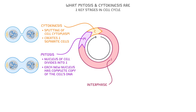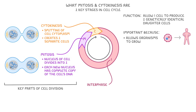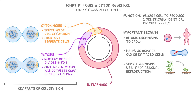Mitosis and cytokinesis are both key parts of cell division, and their function is to allow one cell to produce two genetically identical daughter cells. This is important because cell division allows organisms to grow from a single zygote into a multicellular organism made up of billions of cells. Mitosis also helps us replace old or damaged cells, like when you cut your arm and need new skin cells to seal up the wound. Some organisms even use it for asexual reproduction, which is why many plants can produce offspring identical to the original plant.